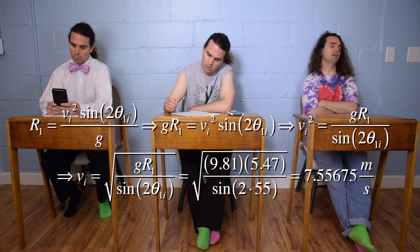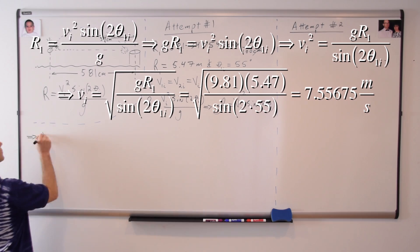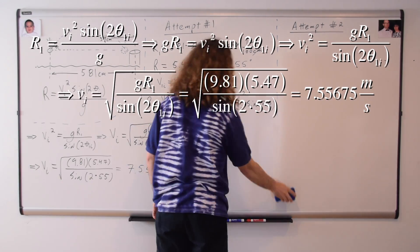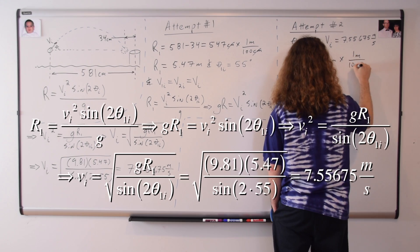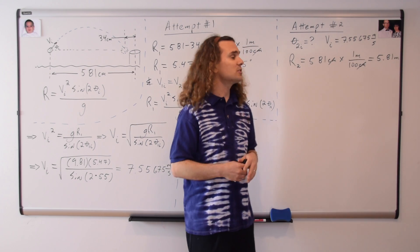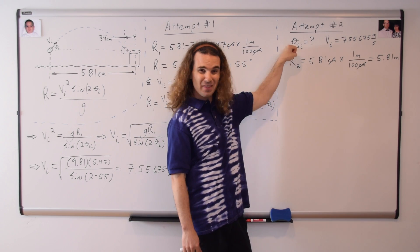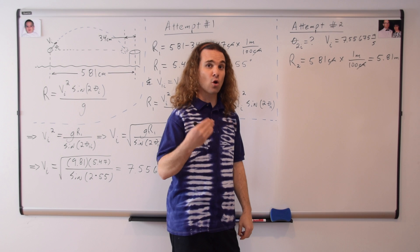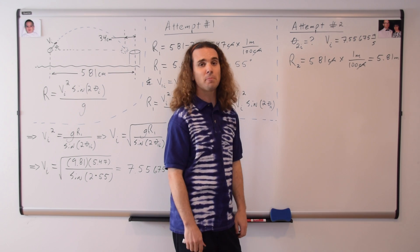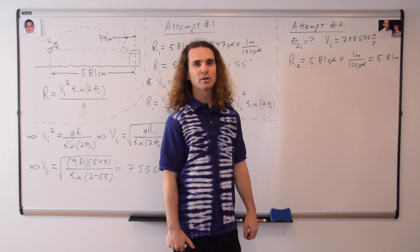7.55675 meters per second. Now, because we have determined the initial speed and we know it's the same for both attempts, we can use it for the second attempt. And remember, we're solving for the launch angle for the second attempt, and we know the range for the second attempt — it is going to be the total distance to the bucket, or 581 centimeters, which converts to 5.81 meters.